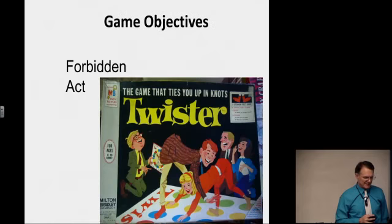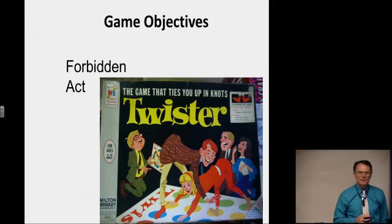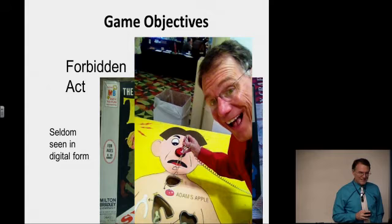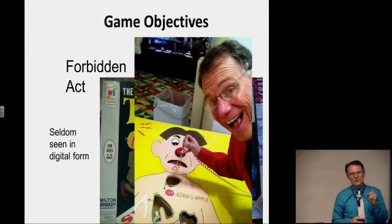The Forbidden Act game — believe it or not, the cover of Twister hasn't changed much over the years. A Forbidden Act game is where you lose if you do something you're not supposed to do. Simon Says would be a Forbidden Act game, like Twister. Another great example is Operation — you have to do certain things, just don't touch the metal sides with your tweezers. Here I am playing a gigantic life-size Operation at the World Science Fiction Convention.